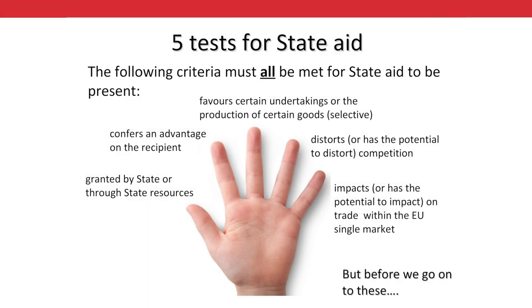These are the five tests or criteria for state aid to be present: 1. That the aid be granted by the state or through state resources. 2. That the aid confers an advantage upon the recipient. 3. That the aid is selective. 4. That the aid distorts or has the potential to distort competition. 5. That the aid impacts or has the potential to impact upon trade between member states.